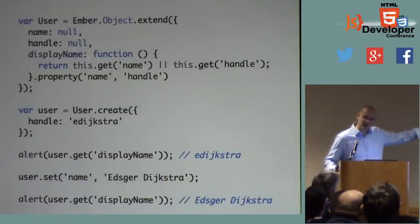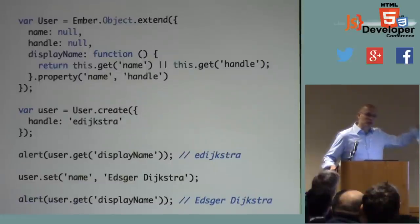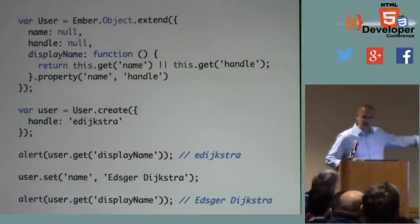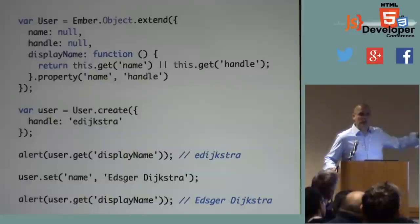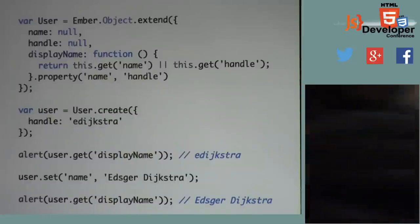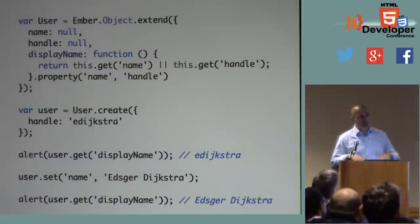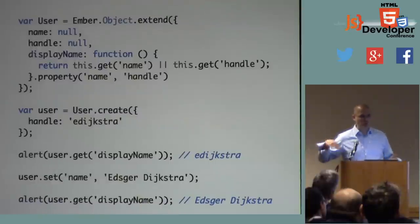The value is actually cached. If you need to get this property multiple times and neither name nor handle have updated, it returns the cached value. Observers come in because it can observe these properties and only invalidates the cache when those properties change.